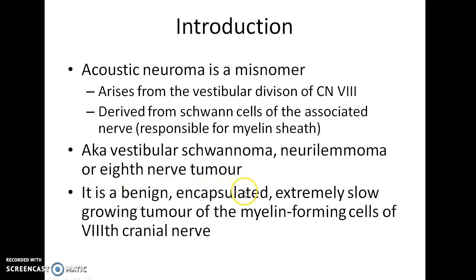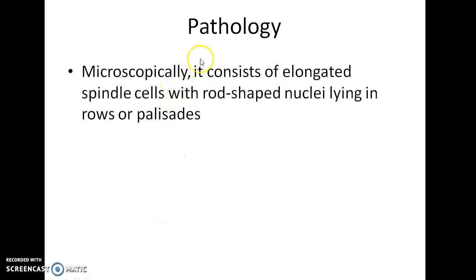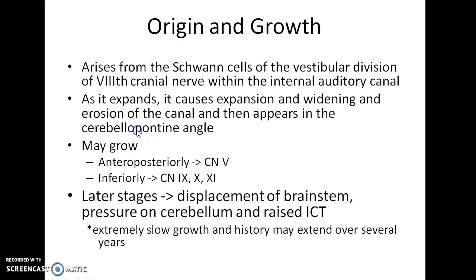It is a benign, encapsulated, extremely slow growing tumour of the myelin forming cells of the 8th cranial nerve. Coming to the pathology of this disease, microscopically it consists of elongated spindle cells with rod-shaped nuclei lying in rows or palisades.